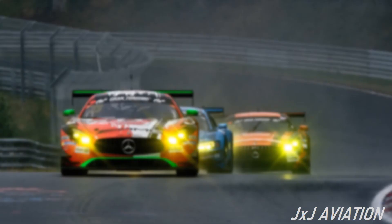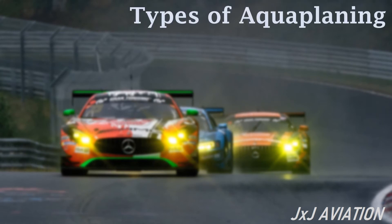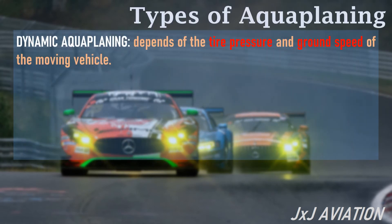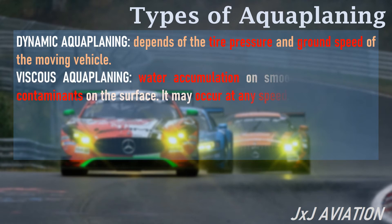Types of aquaplaning. Dynamic aquaplaning depends on the tire pressure and ground speed of the moving vehicle. Viscous aquaplaning occurs because of water accumulation on smooth surfaces and contaminants on the surface, and it may occur at any speed.